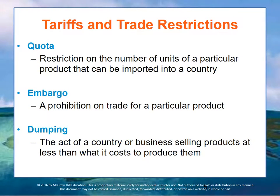Other legal barriers to trade are quotas, embargoes, and dumping practices. A quota is a restriction on the number of units of a particular product that can be imported into a country. Quotas may be established by a voluntary agreement or by a governmental decree. An embargo prohibits trade of a particular product and is generally directed at specific goods or countries, and may be established for political, economic, health, or religious reasons.